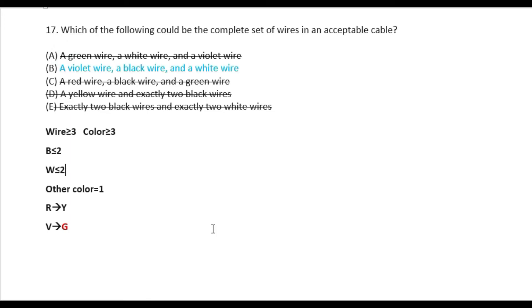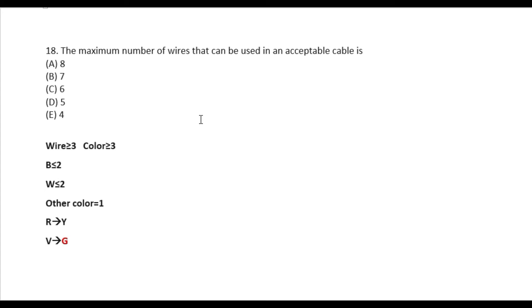But the answer is a red color. The maximum number of wires that can be used in an acceptable cable is, can we change the color? This is the color, total color, black, white color. The color color is 4. The color is more color, so color is 1. So I need 3 colors. So I need 3 colors. And I need 3 colors. So I need 4 colors.